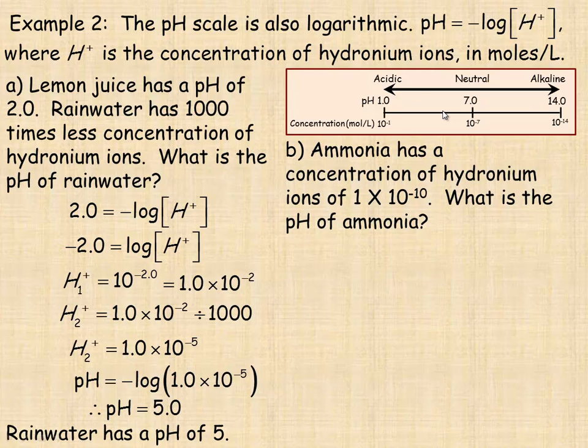Rainwater isn't quite neutral. It is slightly acidic. You might expect it to be 7, but it is slightly acidic.